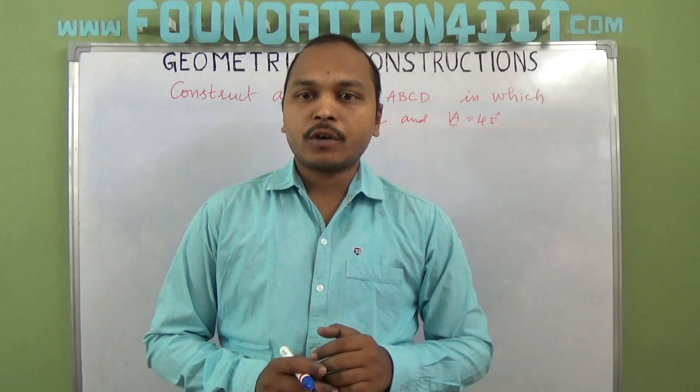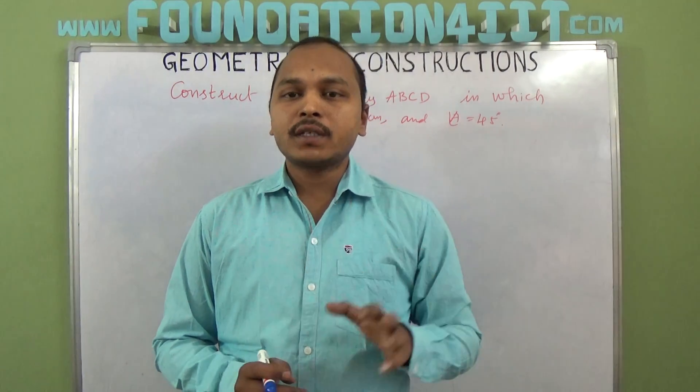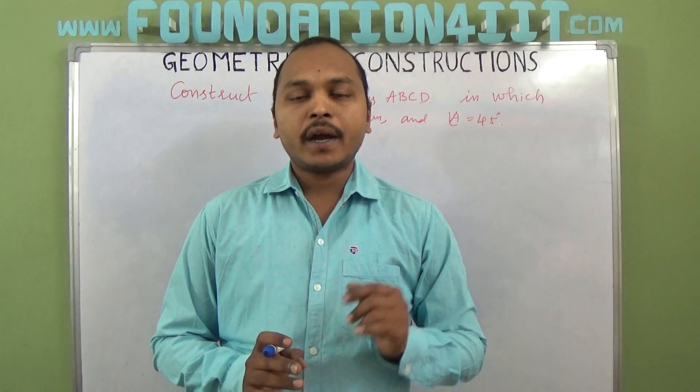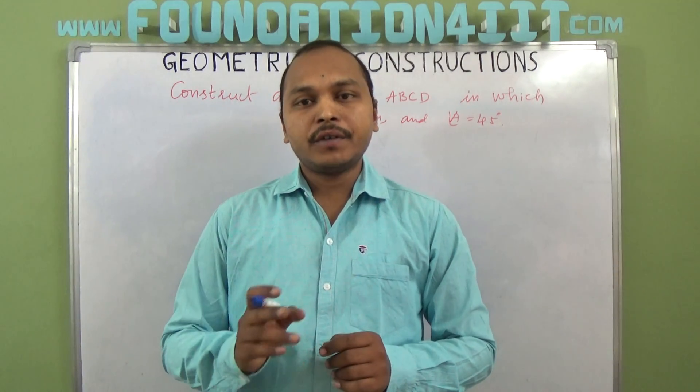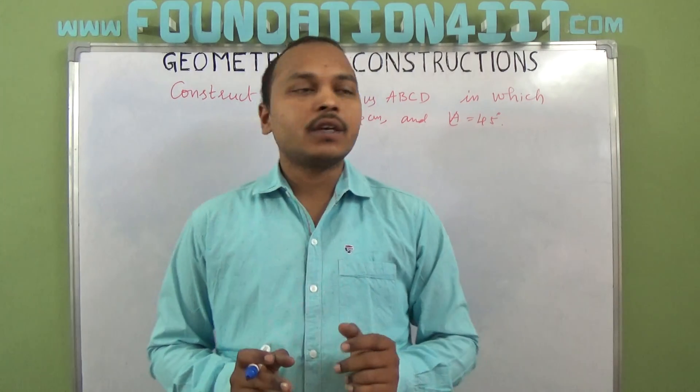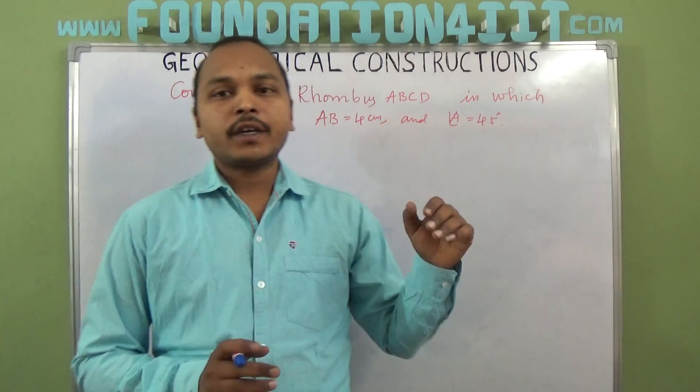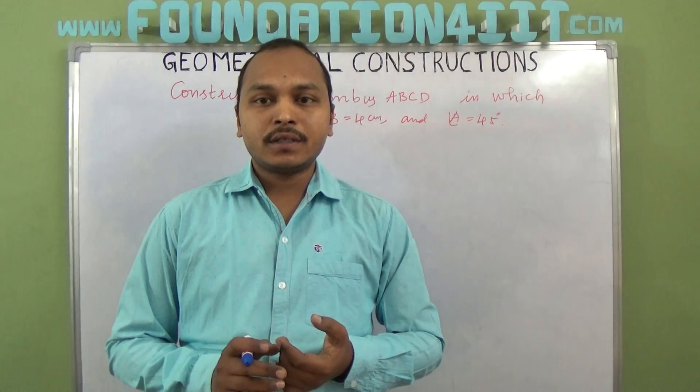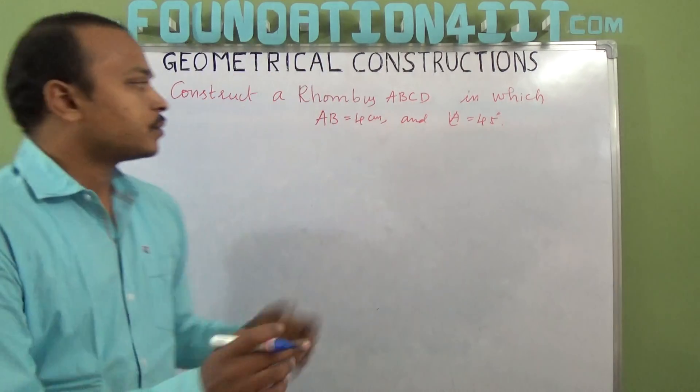When you see the properties of rhombus, all the sides are equal and opposite angles are equal. Every side is equal and only opposite angles are equal. So if angle A is 45 degrees, the opposite angle C is also 45 degrees. Observe the rough diagram.